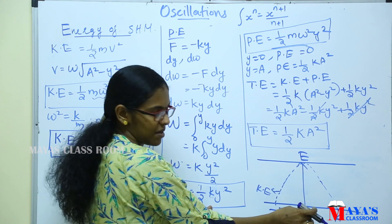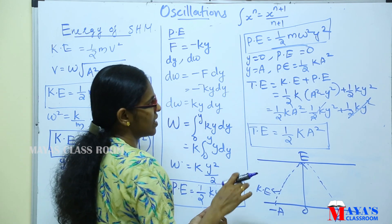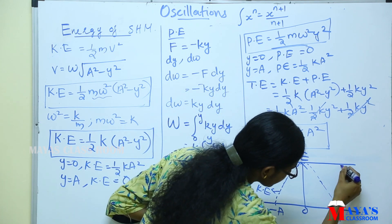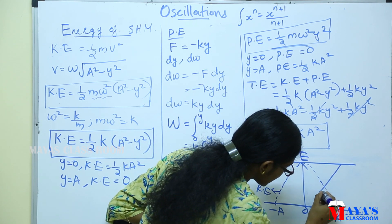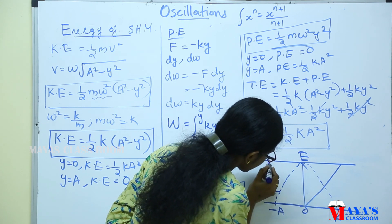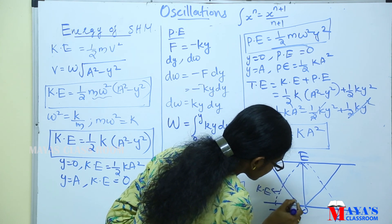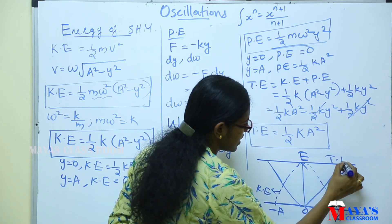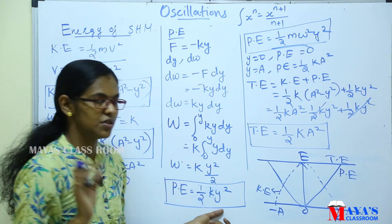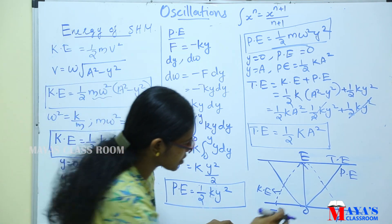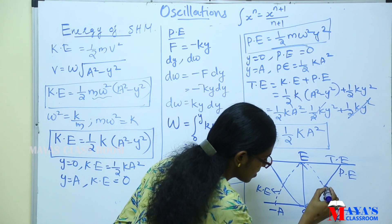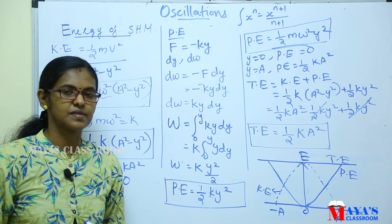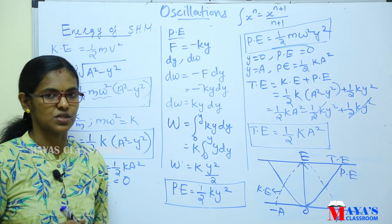If we recall the potential energy, the potential energy is maximum at the extreme position, represented by the dark line. This is the graphical representation of the total energy of Simple Harmonic Motion, which is the application of Simple Harmonic Motion.